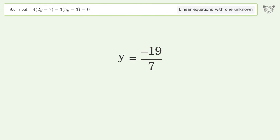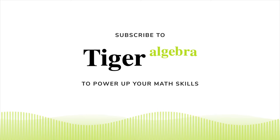And so the final result is y equals negative 19 over 7.